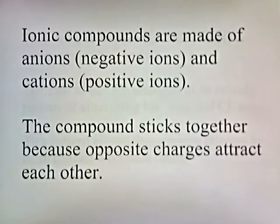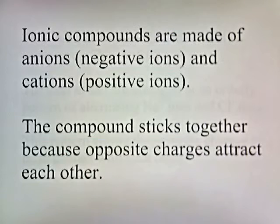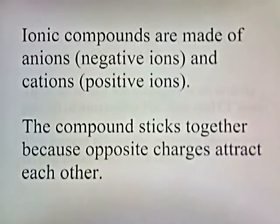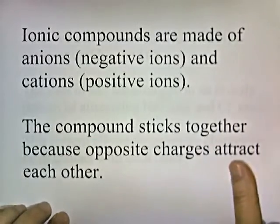Ionic compounds are made of anions, negative ions, and cations, positive ions. The compound sticks together because opposite charges attract each other, and conversely, similar charges repel each other.